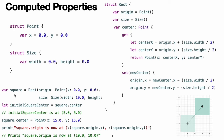The example creates a new Rect variable called square, initialized with an origin point of (0, 0) and a width and height of 10, represented by the light green square in the diagram. The square variable's center property is then accessed through dot syntax — square.center — which causes the getter for center to be called to retrieve the current property value. Rather than returning an existing value, the getter calculates and returns a new point representing the center of the square, correctly returning a center point of (5, 5).